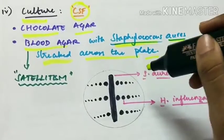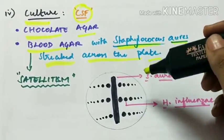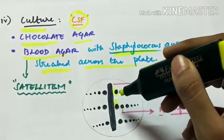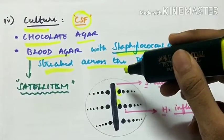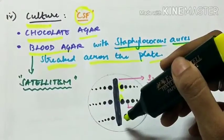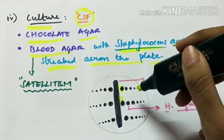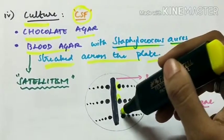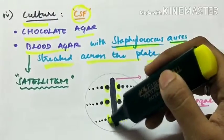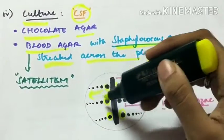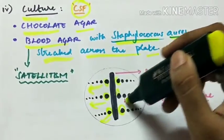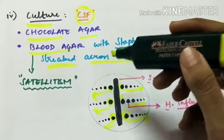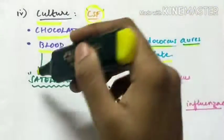When staphylococcus aureus streaked across the plate of blood agar on which a specimen containing Haemophilus influenzae has been inoculated, after overnight incubation, the colonies of Haemophilus influenzae will be large and well developed along the side of the streak of staphylococcus and smaller farther away. These are the colonies of Haemophilus influenzae and this phenomenon is called Satellitism.